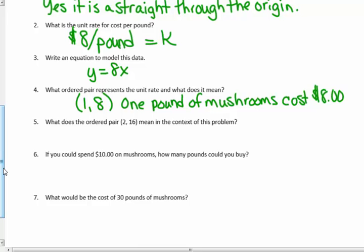What does the ordered pair 2-16 mean? 2 pounds of mushrooms costs $16.